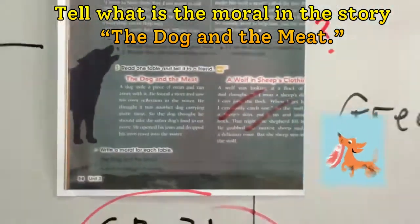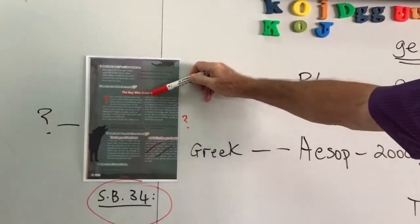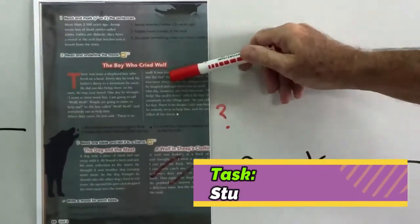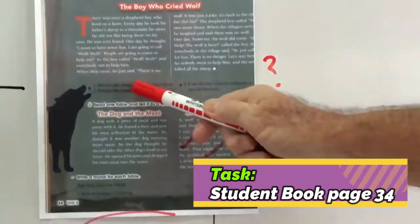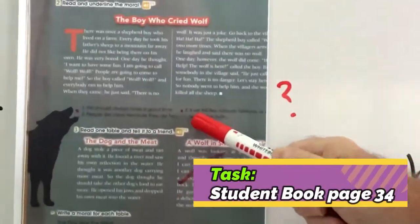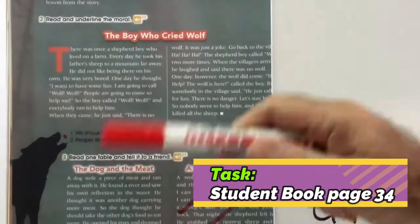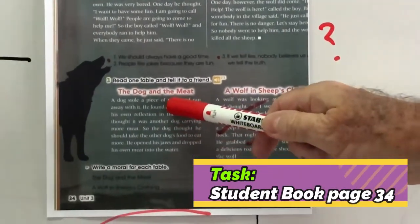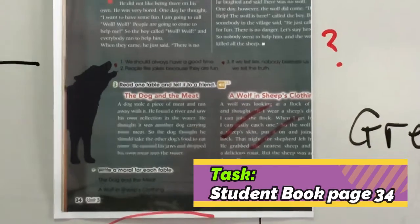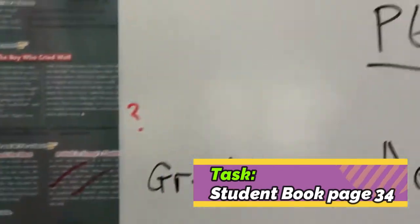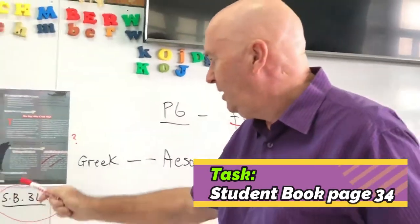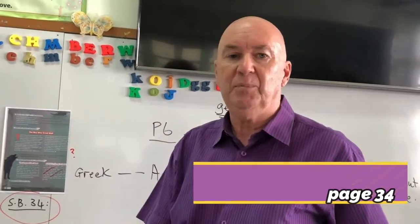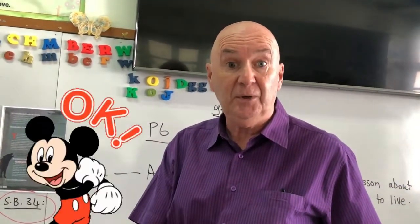So that's two things. Number one, read the fable of the Boy Who Cried Wolf and choose which is the moral for this story. And the second thing, read the little fable of The Dog and the Meat and tell me — what do you think is the moral? What do you think the writer is trying to tell people that it was a good idea to be?